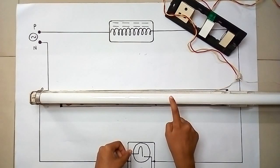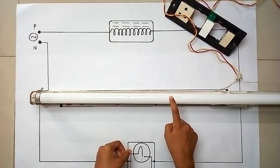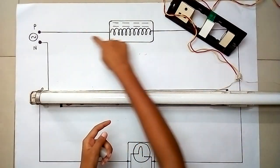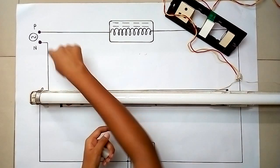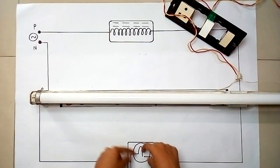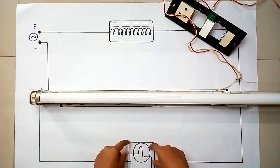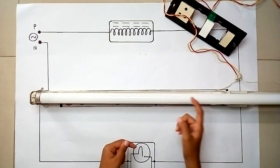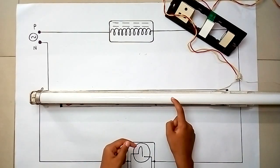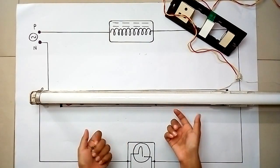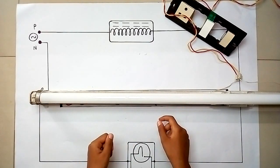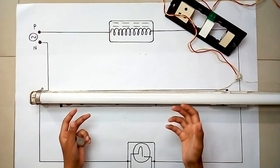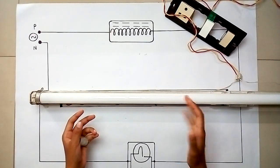That is because the potential difference across the fluorescent lamp is less than the potential difference across the two strips, making establishing an arc in the fluorescent lamp far easier. The starter is no longer part of the circuit once the lamp has started, because argon gas reduces the potential difference once the lamp starts.